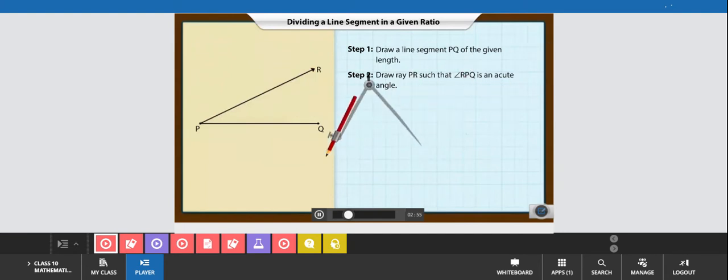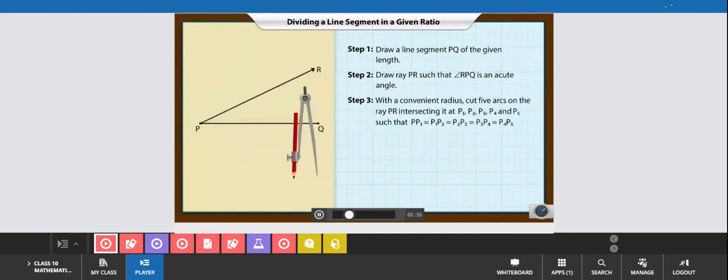Pick the compass and a convenient radius and cut five arcs on the ray PR intersecting it at P1, P2, P3, P4, and P5.